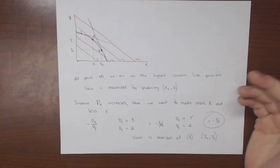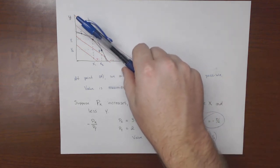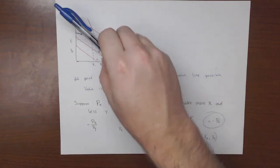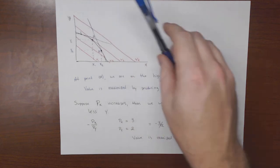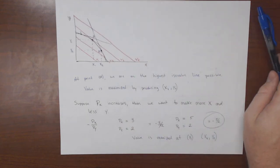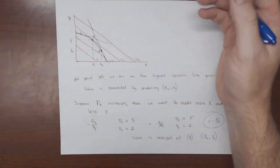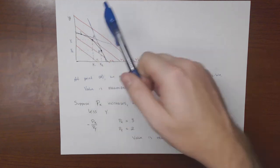So we can see how different economies will respond to changes in prices. If prices change, all it does is it rotates the ISO value line, or ISO value curve, and we continue on maximizing value, but it'll be at a different point.